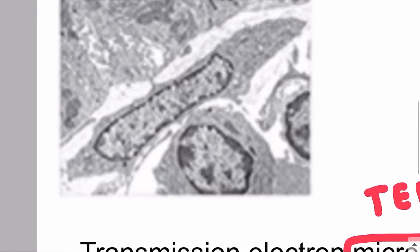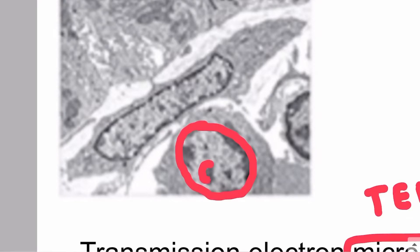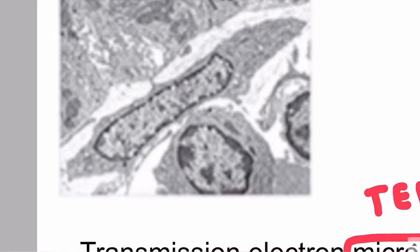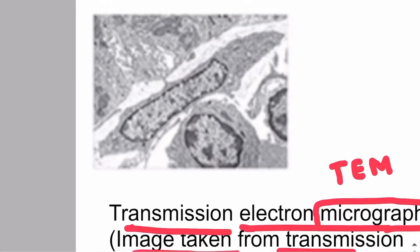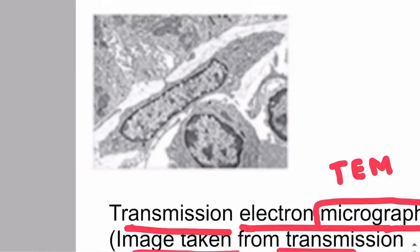For example, you can see the nucleus in this structure — this image is taken from the transmission electron microscope. When you look at internal structures and get a 2D image, it means the image is taken from the transmission electron microscope.